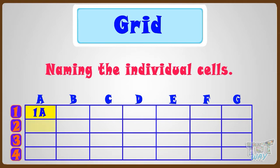This is 2A as the column name is A and the row name is 2. Now let's name this cell. It is 3A as the column name is A and the row name is 3. Similarly, this is 4A.